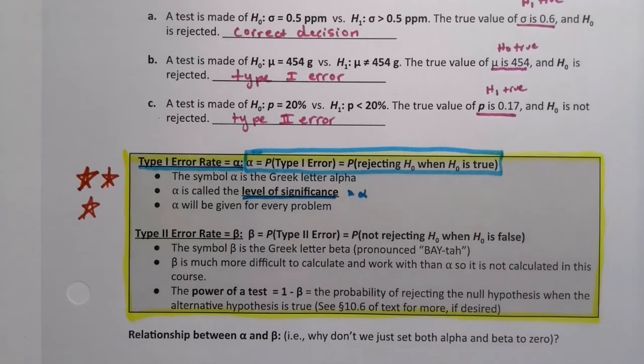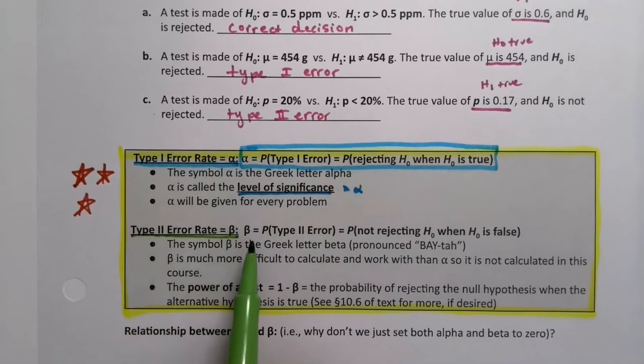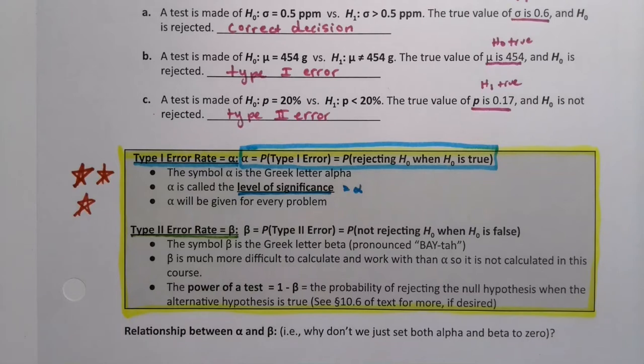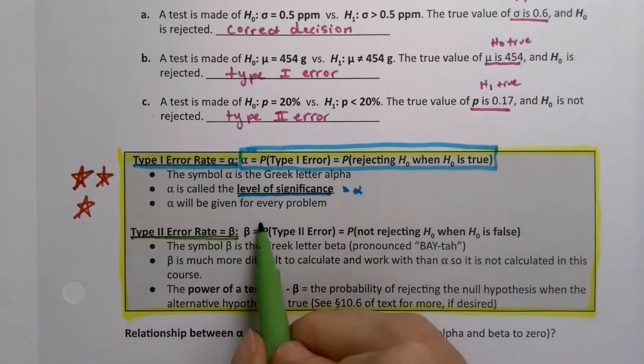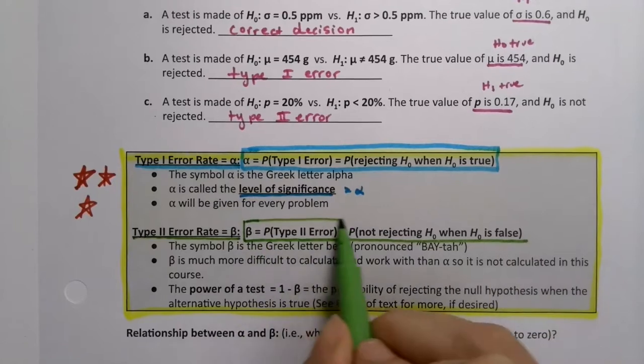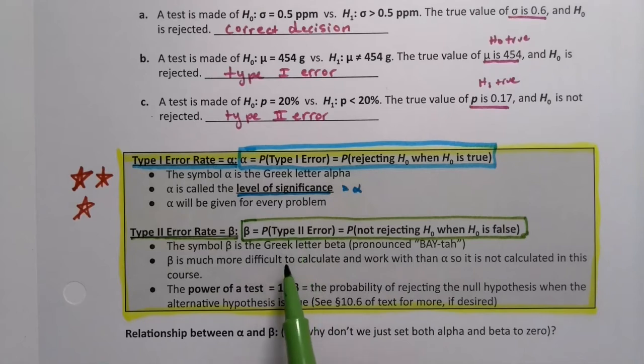Now the Type 2 error we're not going to work with so much but we are going to talk about it a little bit. It's β, the letter B in the Greek alphabet system. So β is the probability of a Type 2 error. And it's the probability of not rejecting H₀ when it was false. Now β is a really big deal in its own right. It's more difficult to work with however so we're not going to deal with it much in this class. But suffice it to say that α and β are related to each other.